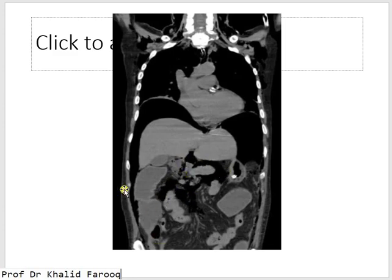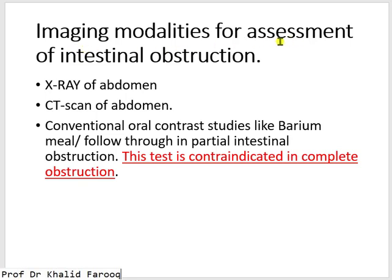Now we are discussing intestinal obstruction. There are three imaging modalities which can be used: number one, X-ray of the abdomen; number two, CT of the abdomen; and number three, conventional contrast studies like barium meal and barium follow-through. However, conventional contrast studies are used only in partial intestinal obstruction — this test is contraindicated in complete obstruction.